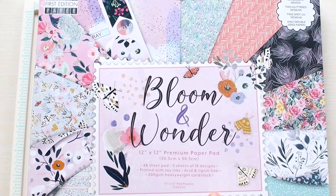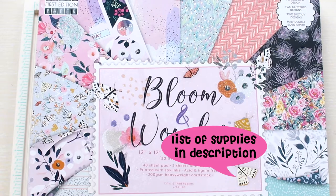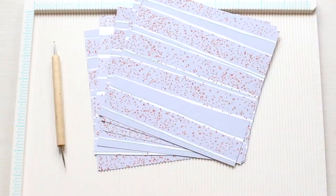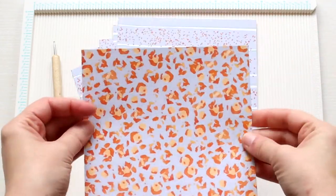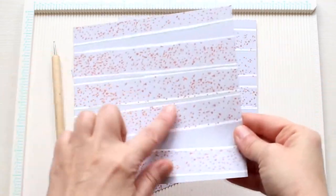For today's project I'm using the first edition Bloom on Wonder paper pad from Twin Craft. I'm using two sheets of paper with this animal print pattern on one side and lines and spots on the other.